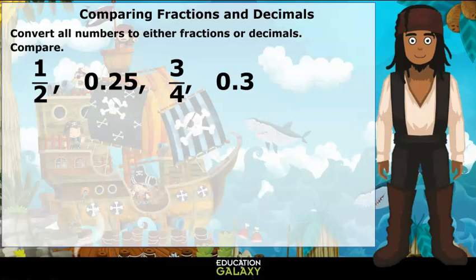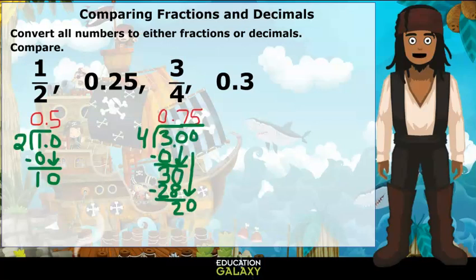Now you're ready to compare fractions and decimals. To do that, you want to first convert all of the numbers to either fractions or decimals, and then compare. For instance, take this list. Let's turn all the fractions into decimals. 1 half is equal to 5 tenths. 3 fourths is equal to 75 hundredths.